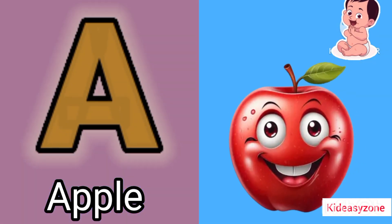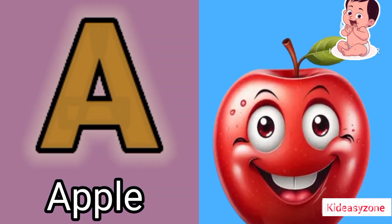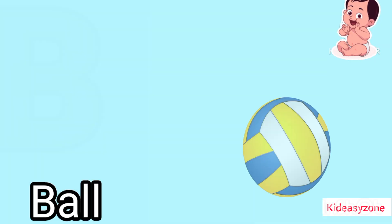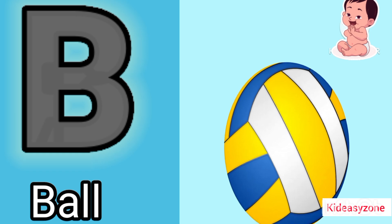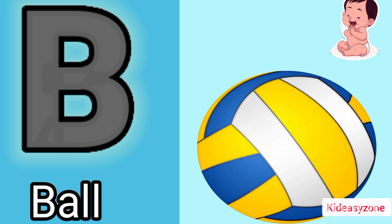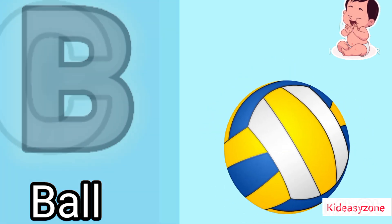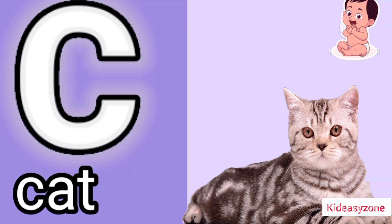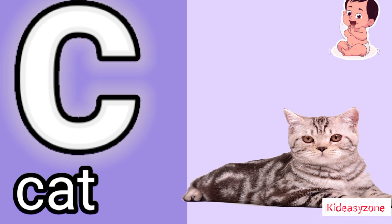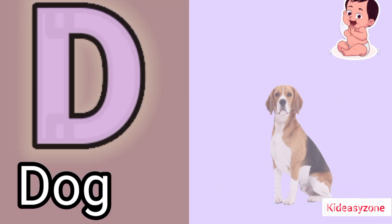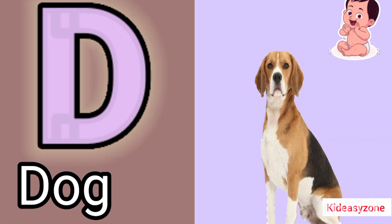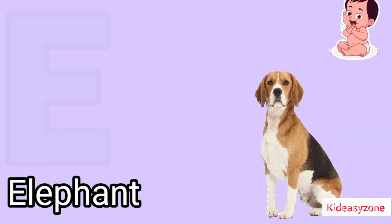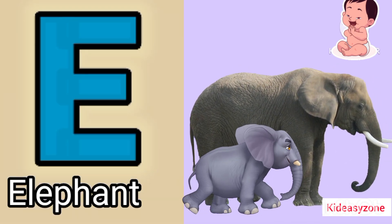A is for apple. B is for ball. C is for cat. B is for dog. E is for elephant.